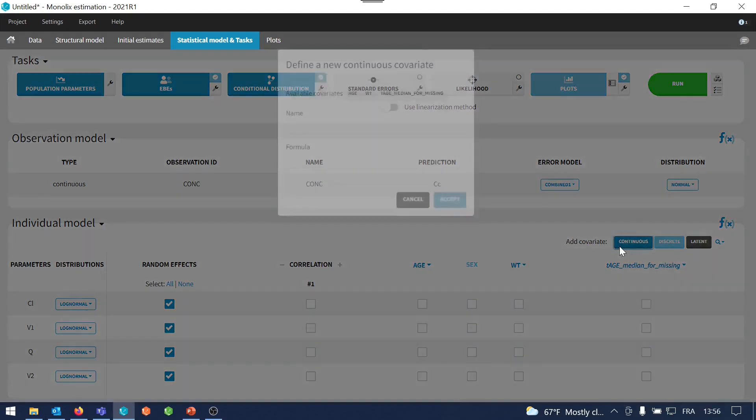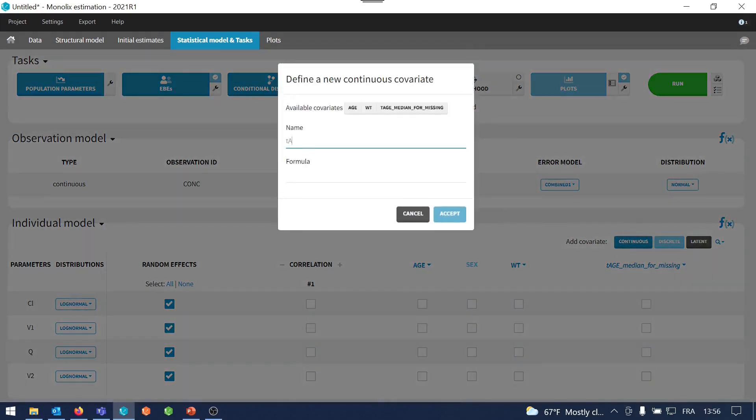I will create another covariate, which is the transformed age in case I use the mean value for missing values. And in my formula, I will use 41 for the imputed value.